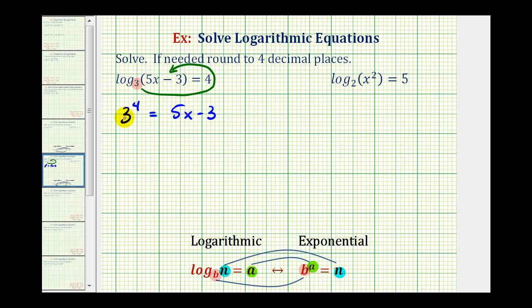So we'll solve this for x. Three to the fourth is equal to 81. Add three to both sides. We have 84 equals five x.